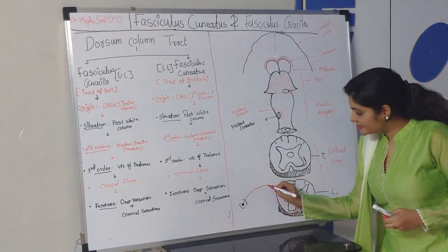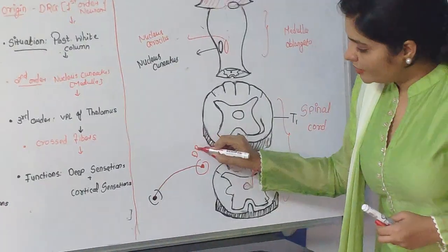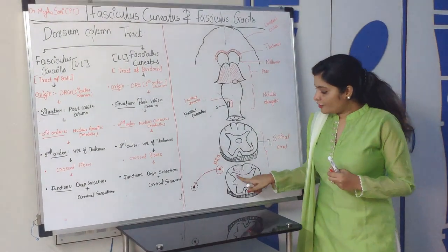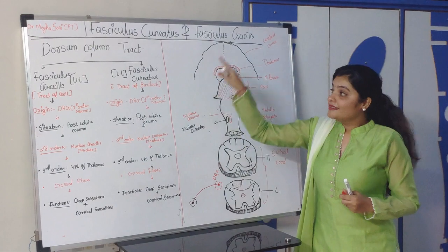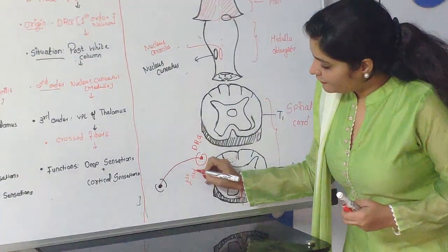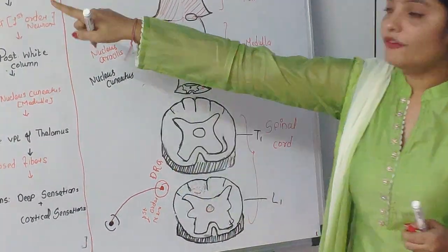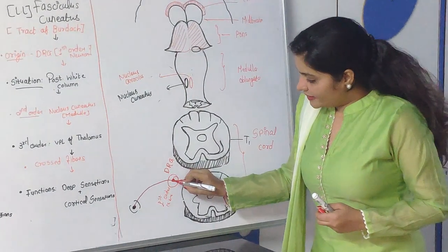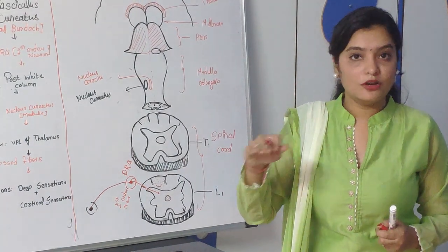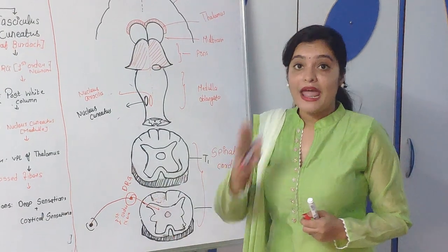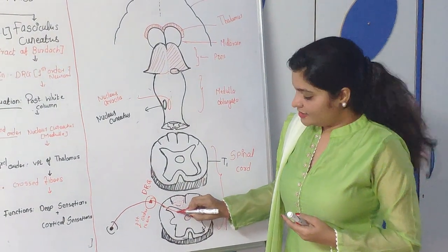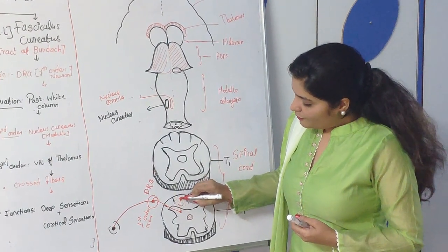This tract is different from other ascending tracts. Other ascending tracts originate from the posterior grey horn cell — from the second order neuron. But this is the only tract which originates from the first order neuron, that is the dorsal root ganglion. After taking origin, it enters into the posterior grey horn cell. This tract does not synapse at the level of the spinal cord — it does not form a second order neuron there — and it does not cross to the opposite side at the spinal cord level. It immediately enters the medial part of the posterior white column.